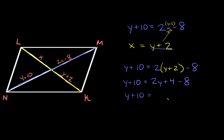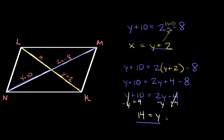So we get y plus 10 is equal to 2y minus 4. Getting all the y's on one side, we subtract y from both sides and add 4 to both sides. So 10 plus 4 is 14, and 2y minus y is just y. So y is equal to 14. Now plugging y into x equals y plus 2: x equals 14 plus 2, which is equal to 16. So x is equal to 16.